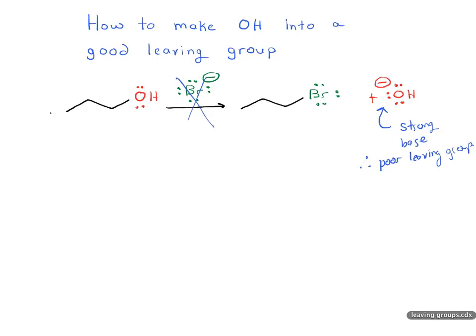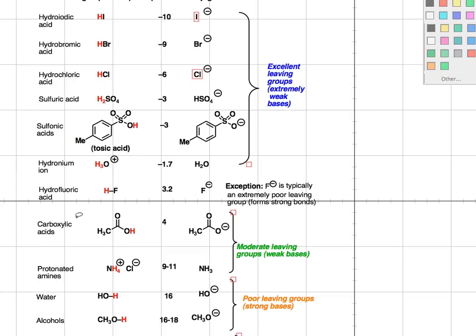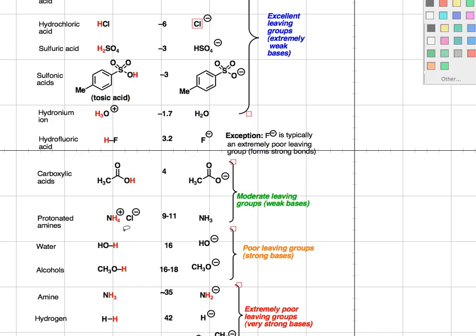Well if you go back to the previous video we went through this pKa table and I'm just going to highlight a minor point here. So here's water, and the hydroxide ion OH minus is a very strong base which makes it a poor leaving group. Now how could we make this into a much better leaving group? Well we'd have to make it into a weaker base.